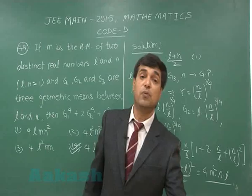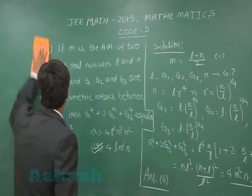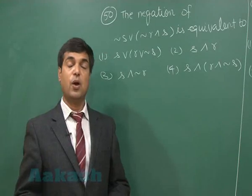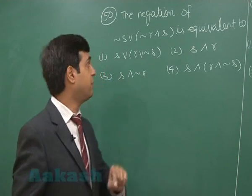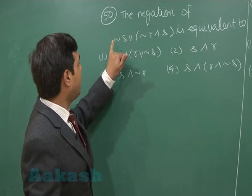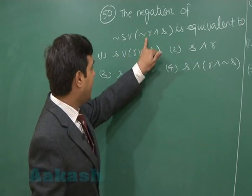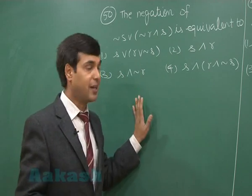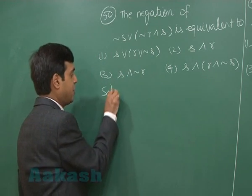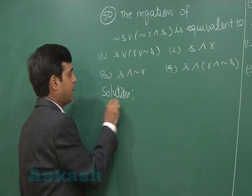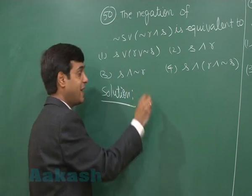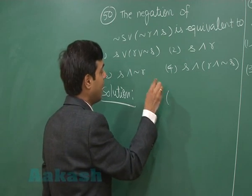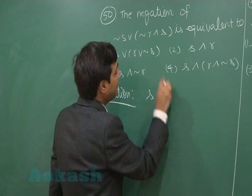Let us move to question number 50: the negation of (¬S ∨ (¬R ∧ S)) is equivalent to — four options are given. Applying negation: negation of ¬S gives S, and the OR changes to AND when we negate.